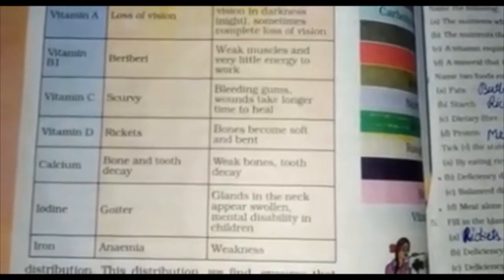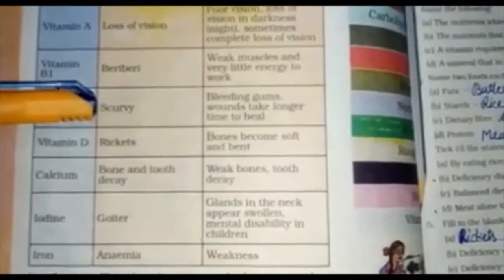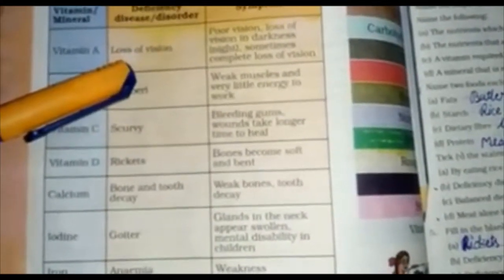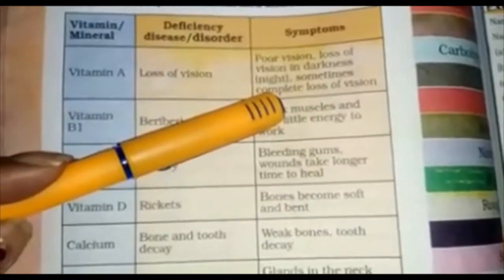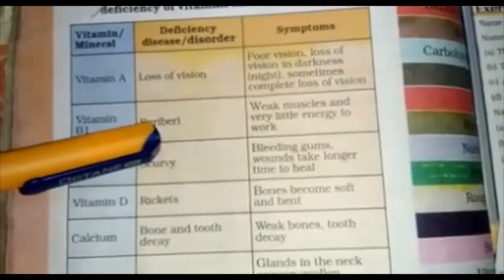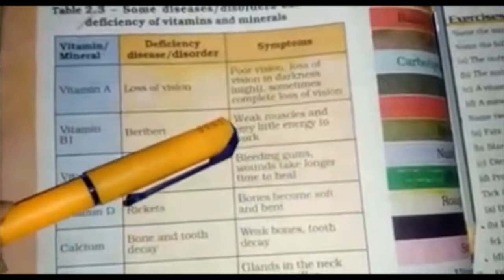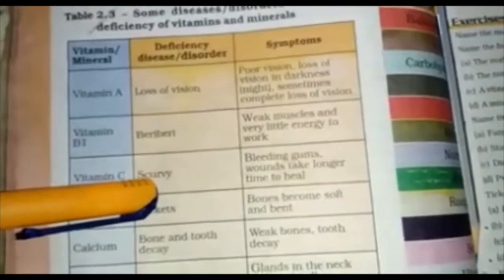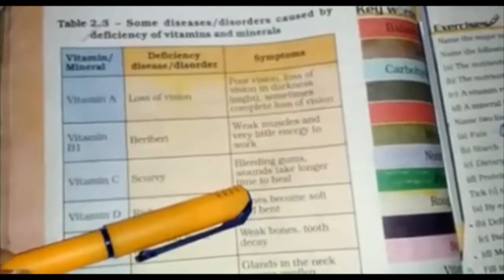Here are some diseases caused by deficiency of vitamins and minerals. First: loss of vision — disease caused by deficiency of vitamin A. The symptoms are poor vision and loss of vision in darkness, sometimes complete loss of vision. Second: beriberi — disease caused by deficiency of vitamin B1. The symptoms are weak muscles and very little energy to work. Third: scurvy — disease caused by deficiency of vitamin C. The symptoms are bleeding gums and wounds taking a longer time to heal.